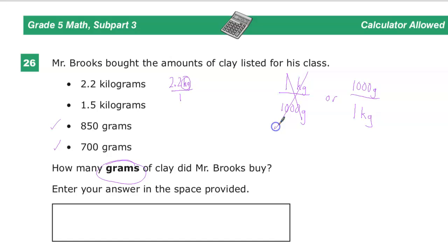So following my logic before I need to have kilograms on the bottom. This one doesn't have that so that's not useful to me. This one does. So all I'm going to do is put this times thousand up here and one kilogram down here.